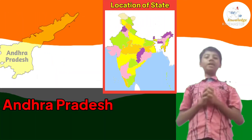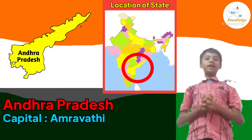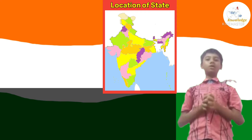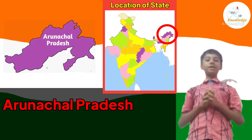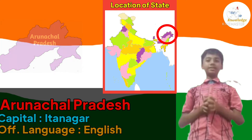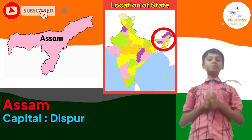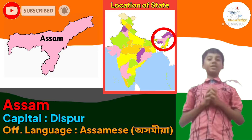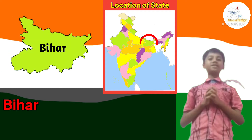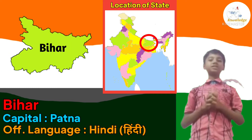State number 1: Andhra Pradesh. Its capital is Amravati and its official language is Telugu. State number 2: Arunachal Pradesh. Its capital is Itanagar and its official language is English. State number 3: Assam. Its capital is Dispur and its official language is Assamese. State number 4: Bihar. Its capital is Patna and its official language is Hindi.